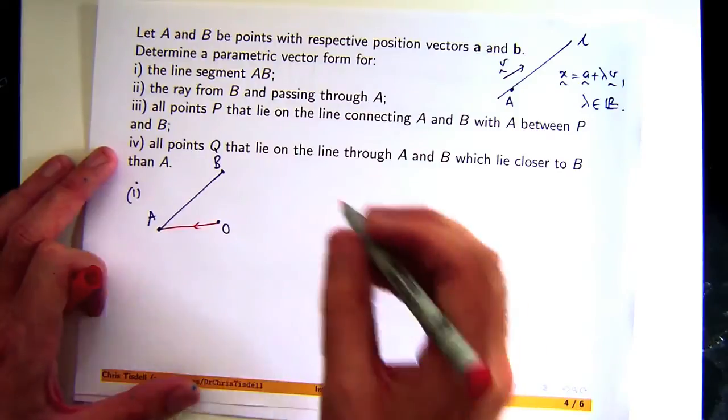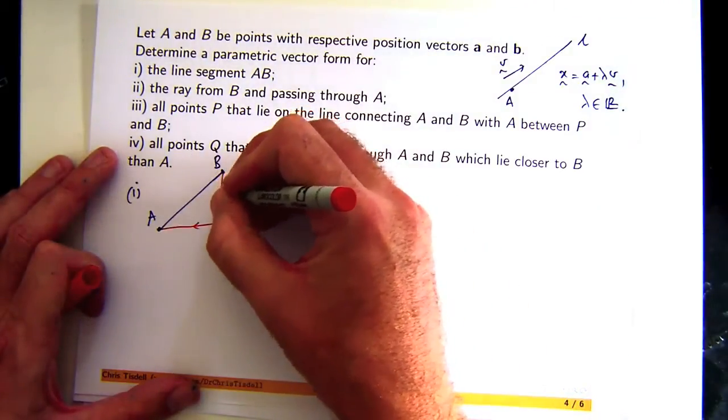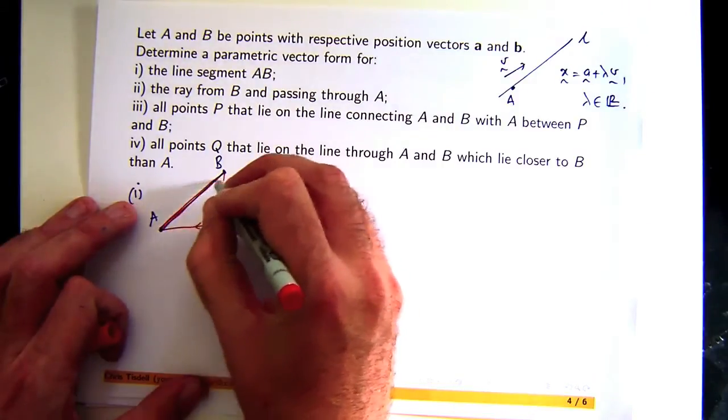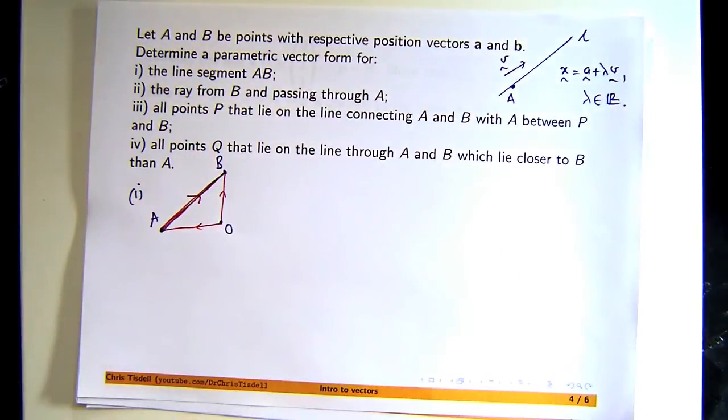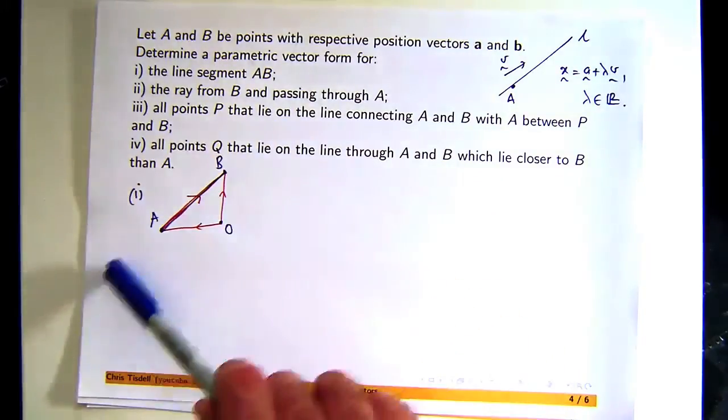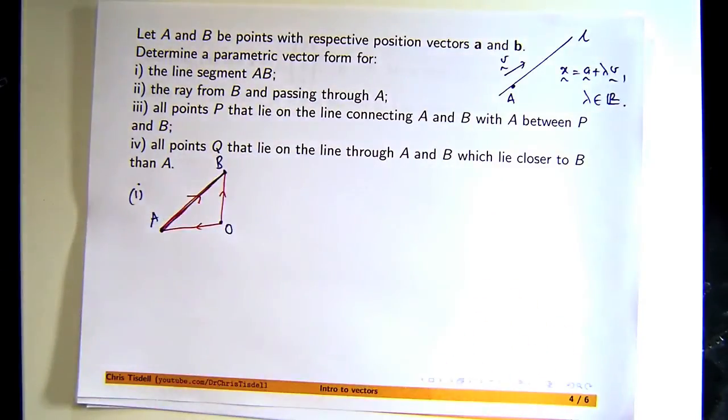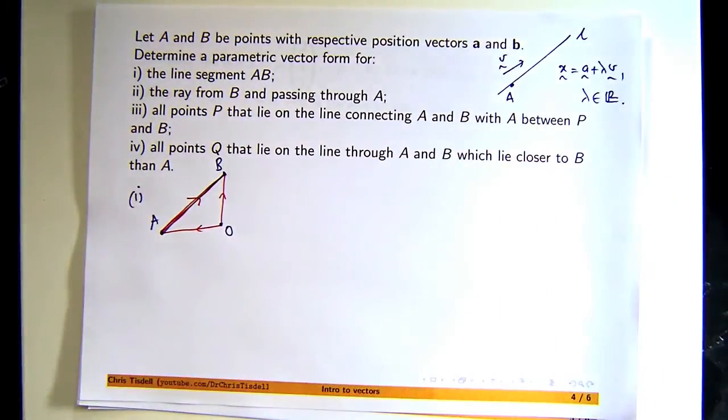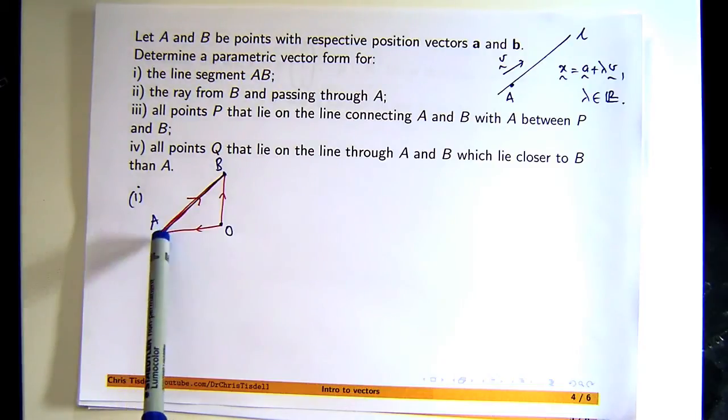Now, that would be the position vector of A, that would be the position vector of B, and the vector from A to B would be there. So I don't want the whole line, I just want that little line segment. We need a vector parallel to the line or the line segment and a point on the line. So we've got a point on the line. If we have another point on the line, then we can form a vector between those points.